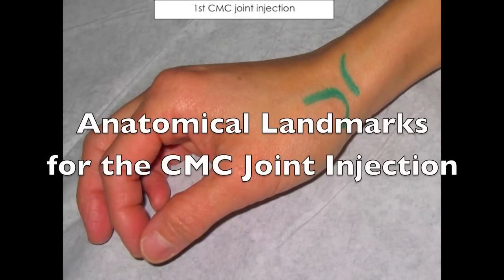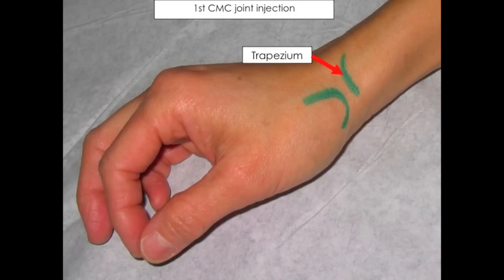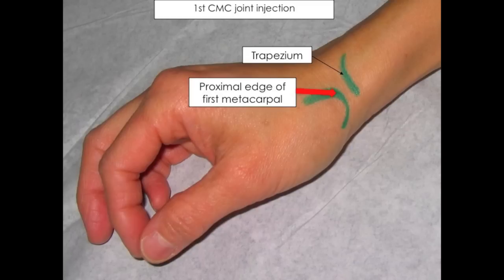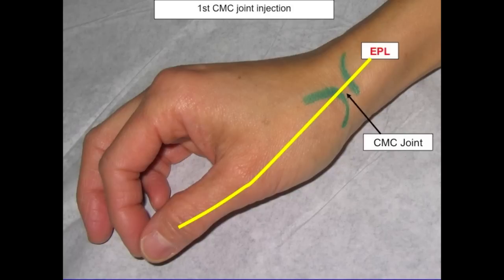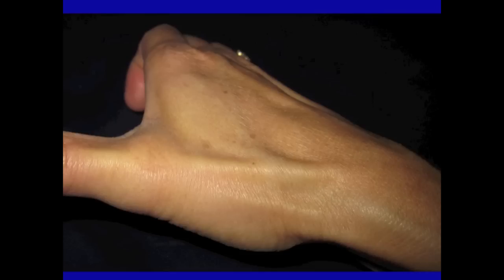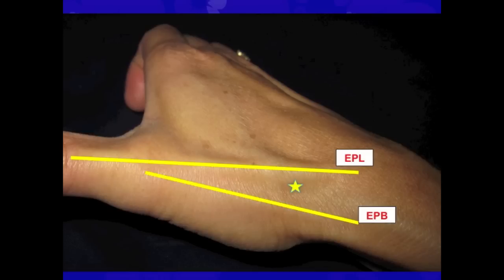Now we can take the anatomical landmarks reviewed on the hand model and apply them to find the CMC injection site on a true hand. The linear articulation between the trapezium and the proximal edge of the first metacarpal identifies the carpal metacarpal joint. To mark the CMC injection site, find the part of the CMC joint that lies between the extensor pollicis longus tendon and the extensor pollicis brevis tendon. The two extensor pollicis tendons are easily palpable and usually visible when the thumb is in extension.